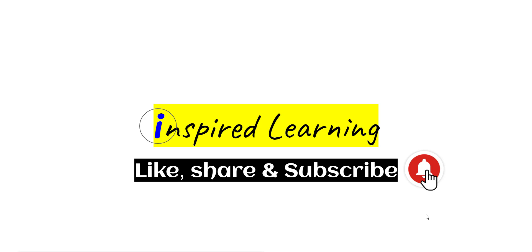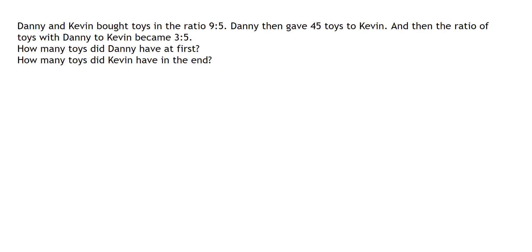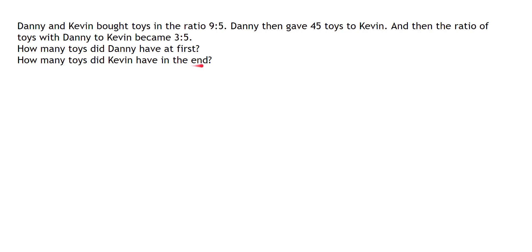Hi everyone, today we are going to look at a ratio problem and we're going to solve it using both models and then algebraic methods. Here is the problem: Danny and Kevin bought toys in the ratio 9 to 5. Danny then gave 45 toys to Kevin, and the ratio of Danny's toys to Kevin's became 3 to 5. How many toys did Danny have at first, and how many toys did Kevin have in the end?